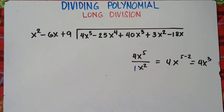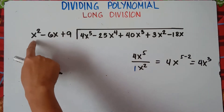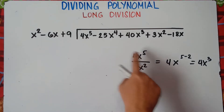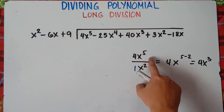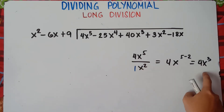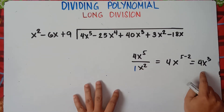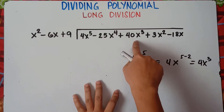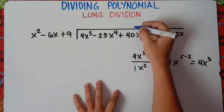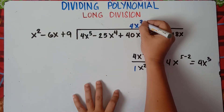So the answer is 4x cubed. Since your answer is x cubed, you need to label and align your answer under the x cubed column. So we write 4x cubed aligned in the proper column.